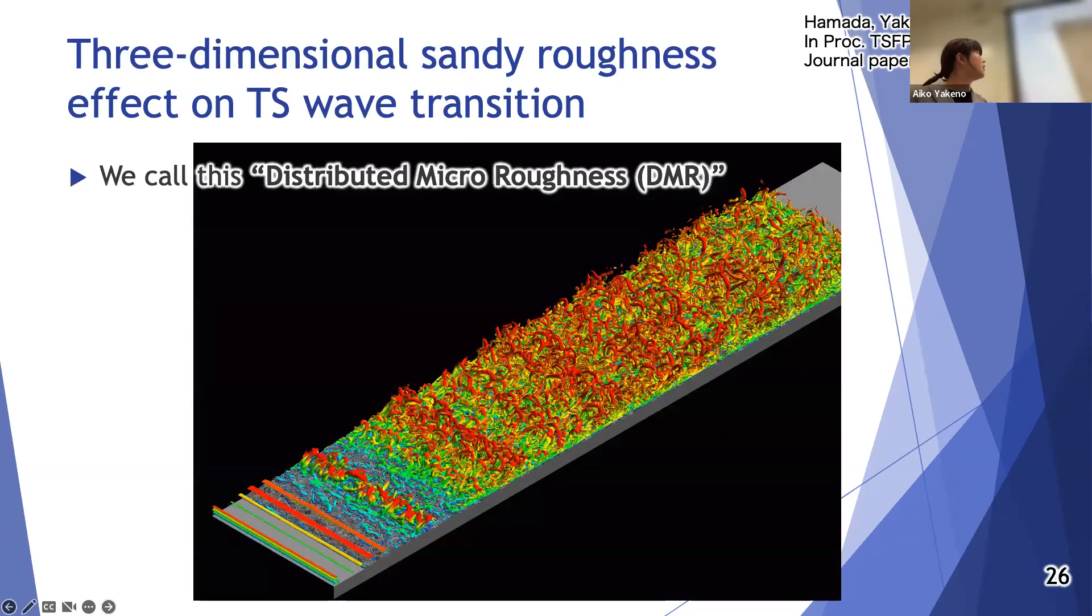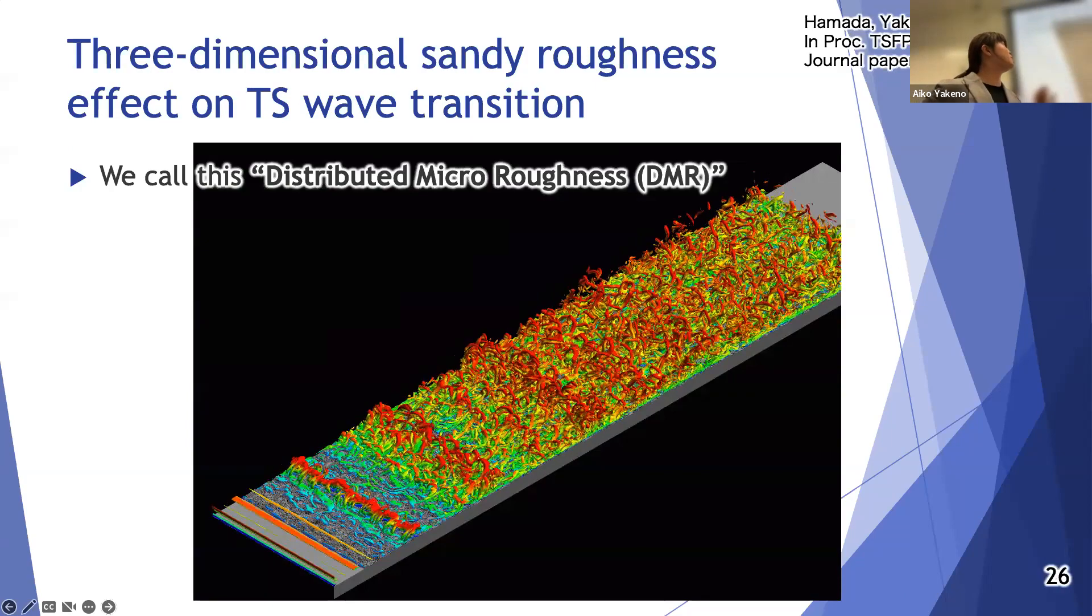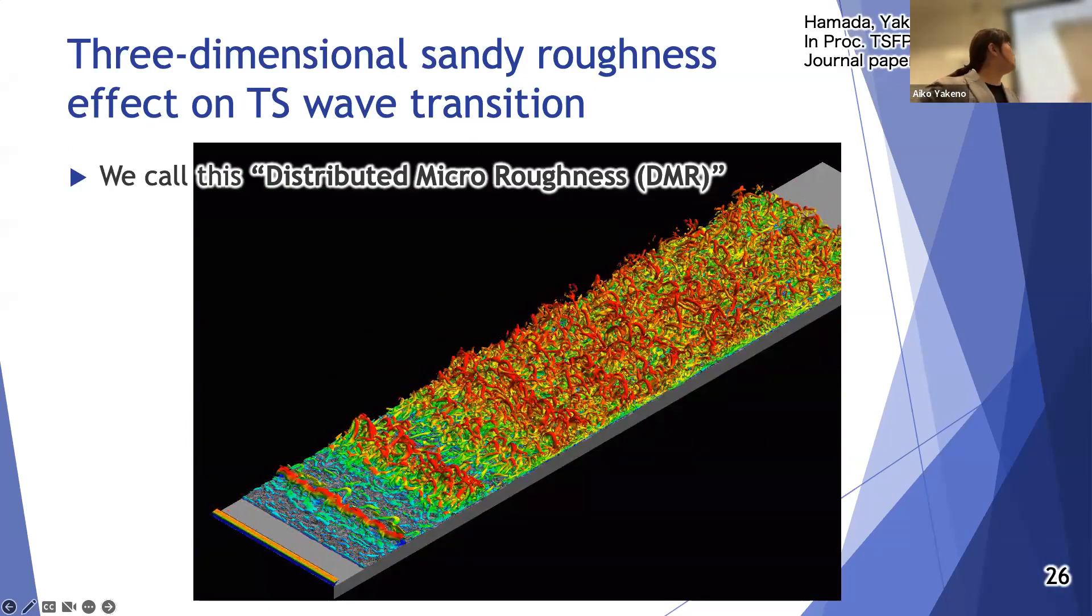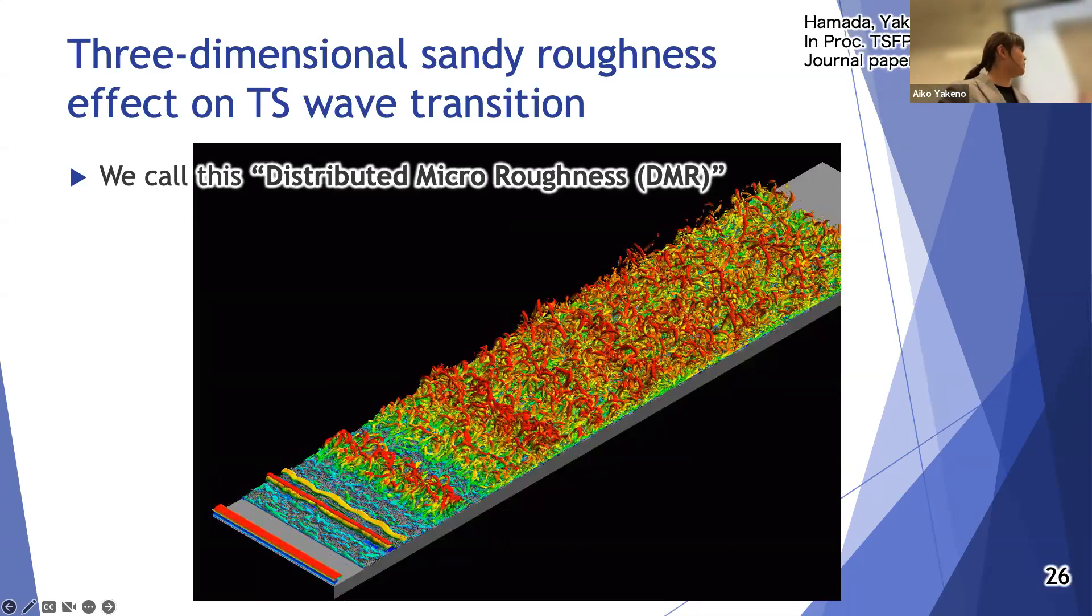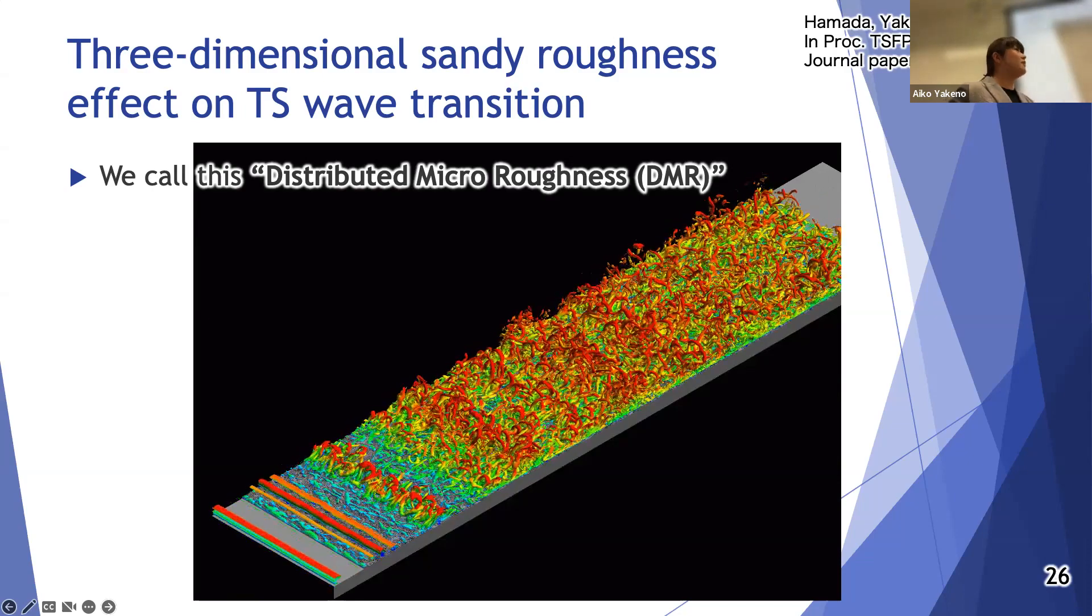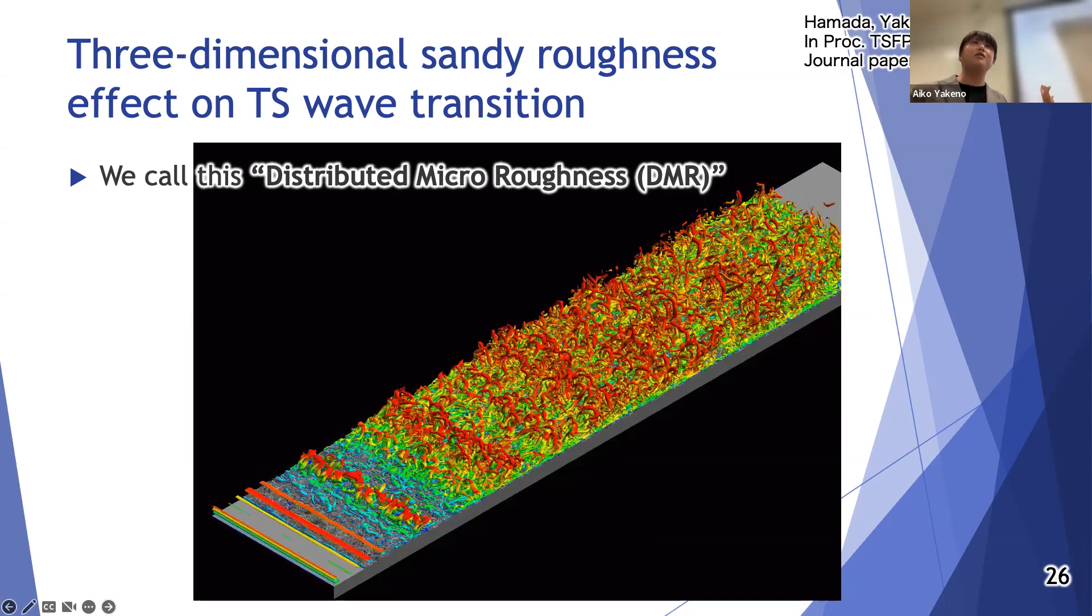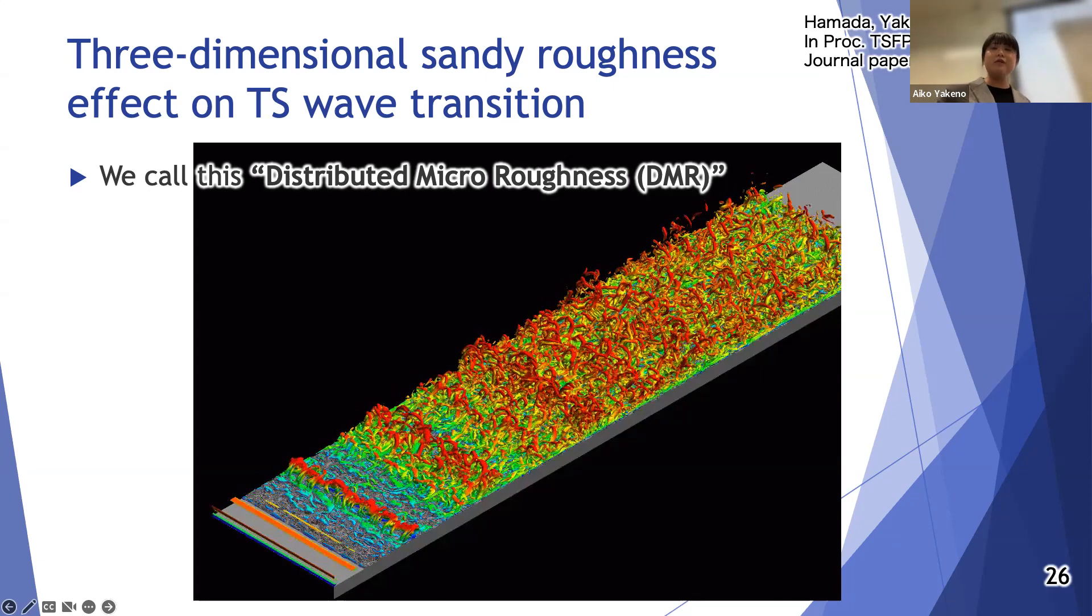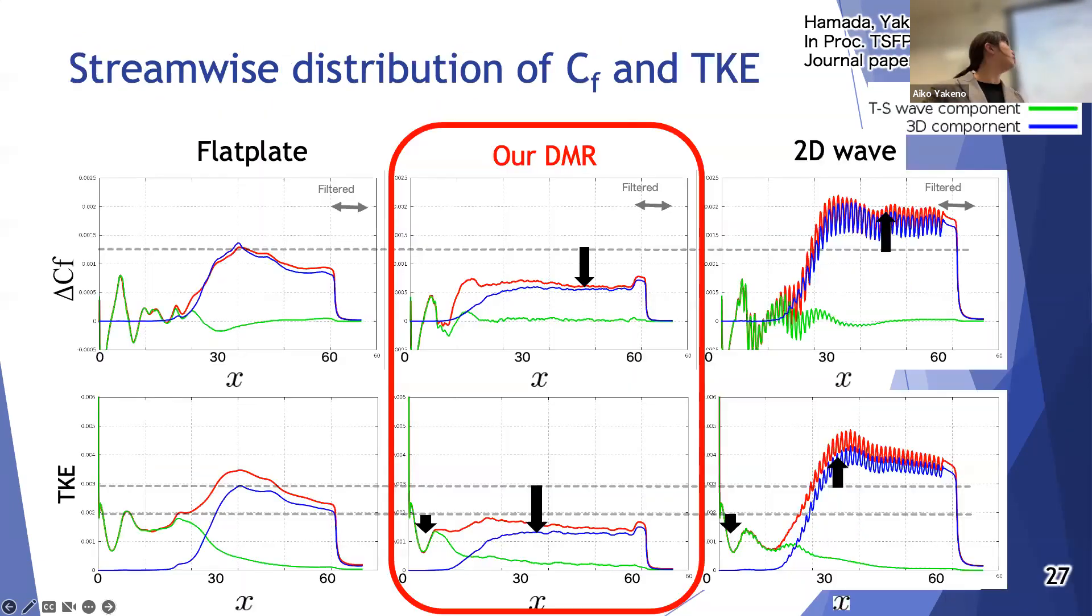On the other hand, for contrast, we tried another more complicated three-dimensional roughness. Then we obtained some drag reduction effect more than smooth surface on that roughness surface. This mechanism itself is now under investigation, but I show some statistics like this.